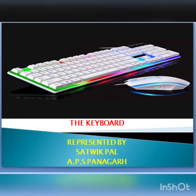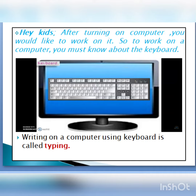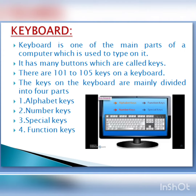Good morning students, today we will learn a very interesting chapter of computer — that is keyboard. After turning on a computer, you would like to work on it, so you must know about the keyboard. Here you can see the picture of a keyboard. When we start using the keyboard for writing something, it is called typing. The keyboard is one of the main parts of a computer, and it has many buttons called keys. There are generally 101 to 105 keys on a keyboard, and they are mainly divided into four parts: alphabet keys, number keys, special keys, and function keys.